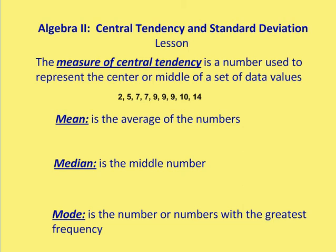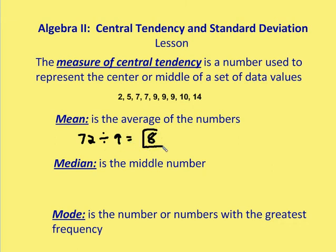Let's calculate each of these given the set: 2, 5, 7, 7, 9, 9, 10, and 14. For the mean, we sum all the values in the set — 2 + 5 + 7 + 7 + 9 + 9 + 10 + 14 — and we get a total of 72. Then we divide by the number of values in the set, which is 9, giving us a mean of 8.